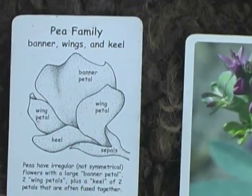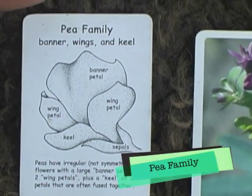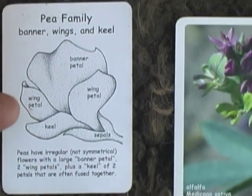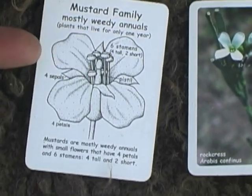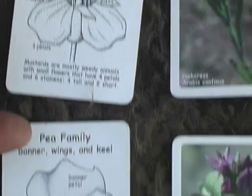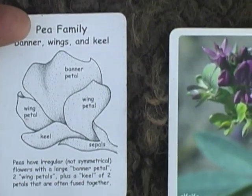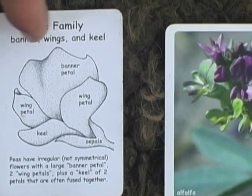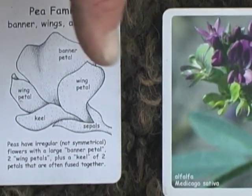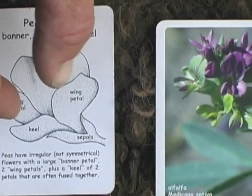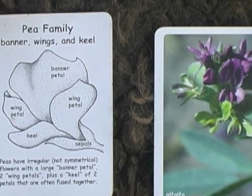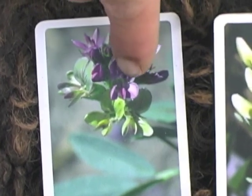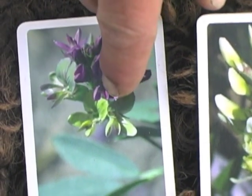The next family is the pea family. Pea flowers are very irregular — in contrast to the mustard family which has regular or symmetrical flowers, the peas are very asymmetrical or irregular. They also have distinctive petals: a big one called the banner petal, then two on the side called the wing petals, and then the bottom one is the keel, kind of like the keel of a boat. If you look closely at these pea blossoms, you'll see the banner, the wings, and the keel.